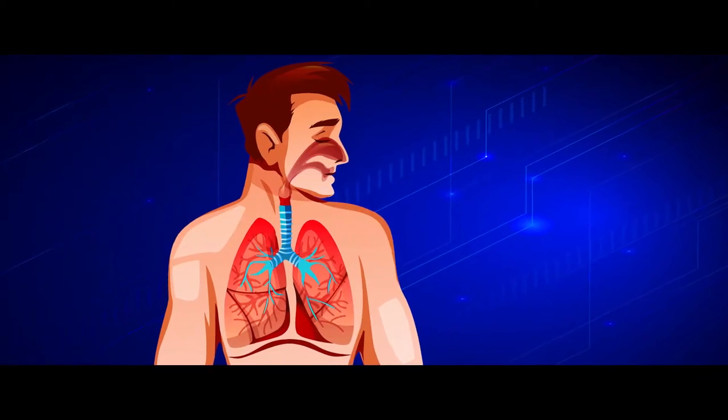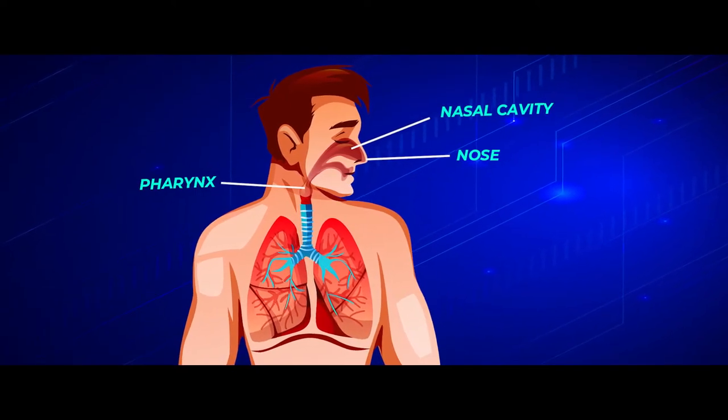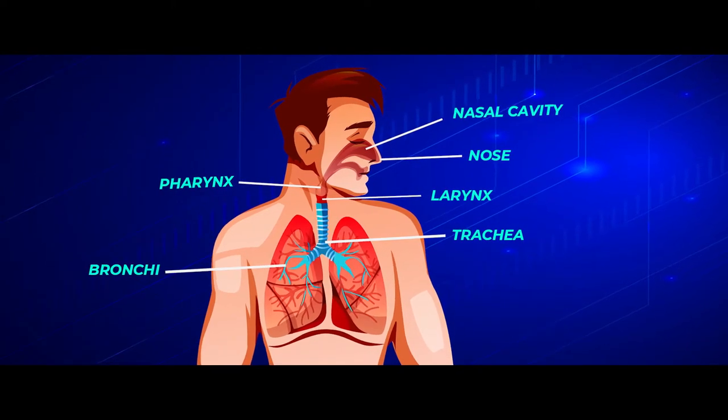The respiratory system is made up of nose, nasal cavity, pharynx, larynx, trachea, bronchi and lungs.